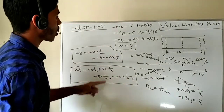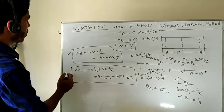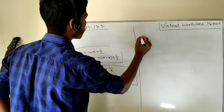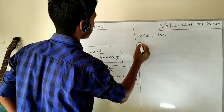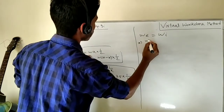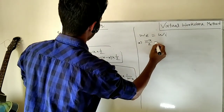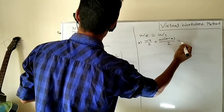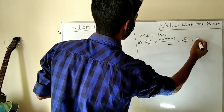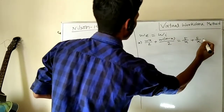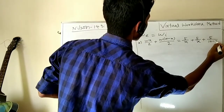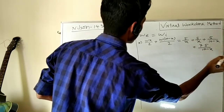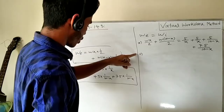Setting external work done equal to internal work done: wx/2 + w(10 − x)/2 = 5/x + 5/x + 5/(10 − x) + 7.5/(10 − x). Simplifying the left side gives 5w, and the right side becomes 10/x + 12.5/(10 − x). So the equation is: wx/2 + w(10 − x)/2 = 5/x + 5/x + 5/(10 − x) + 7.5/(10 − x).